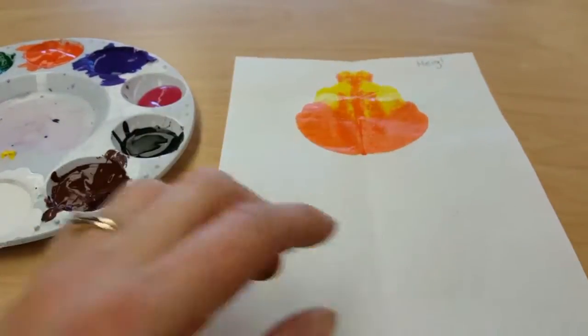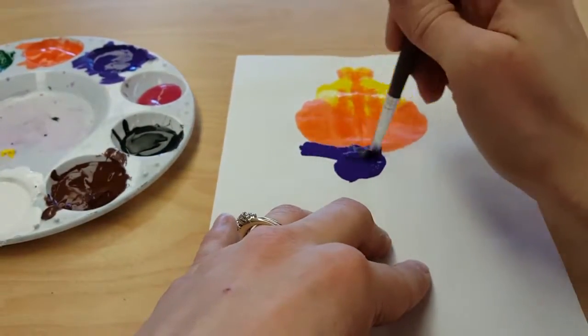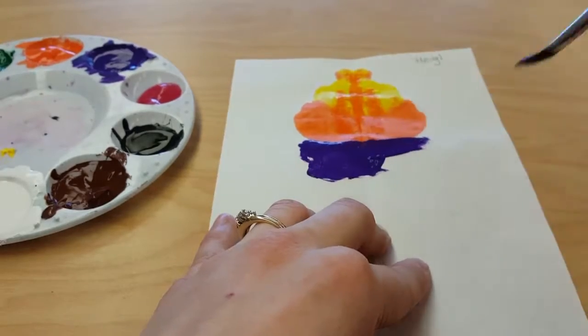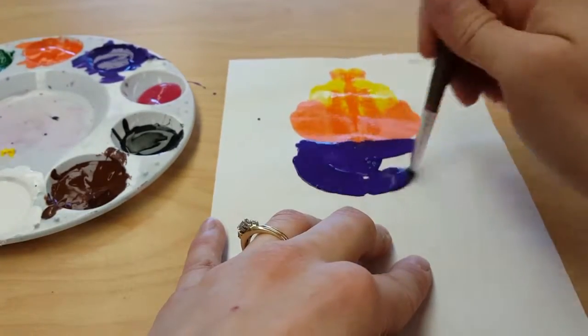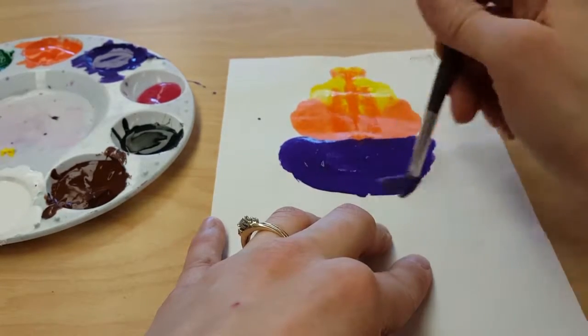So pick another color, paint it in the middle. I'm not trying to paint it like anything—it's not looking like anything exactly.